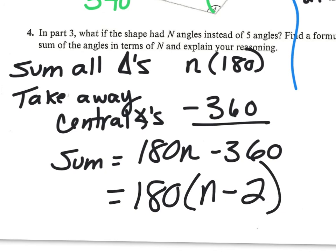That doesn't look like the standard formula, but we can factor out 180 to get 180 times (n minus 2), and then we're done. You are now ready to start the second part of this week's homework online. Hope you're having a great day — take care.